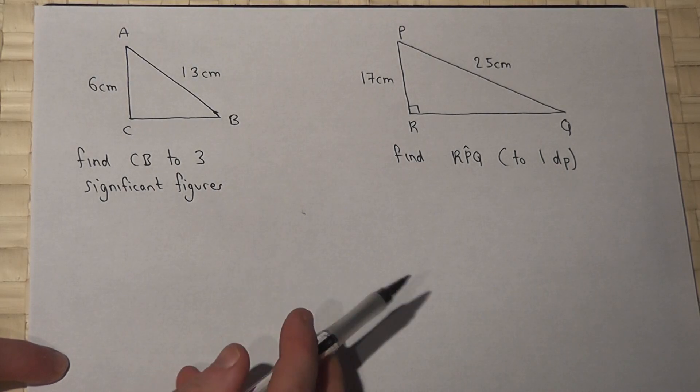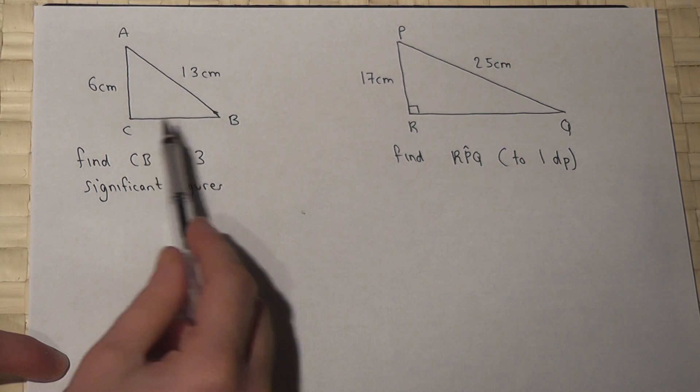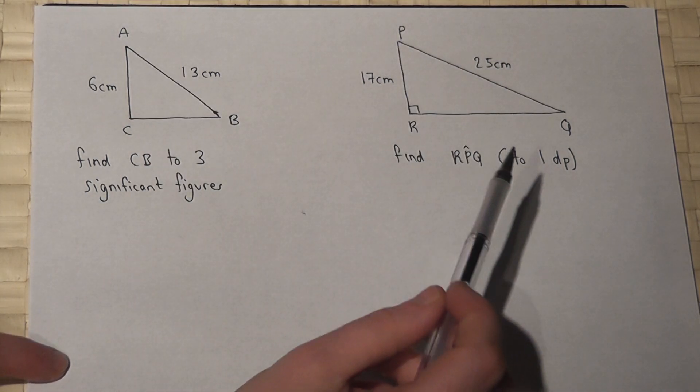This video reviews two important examples in trigonometry, Pythagoras and what is classed as SOHCAHTOA by lots of people.